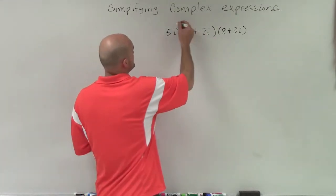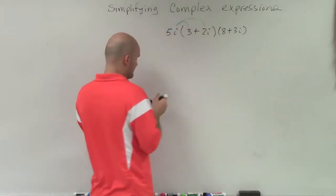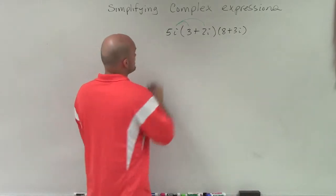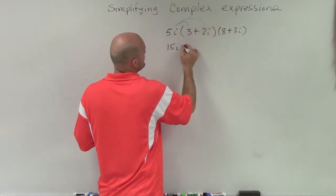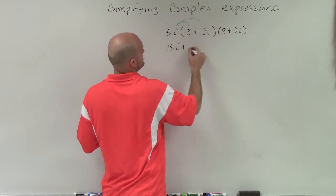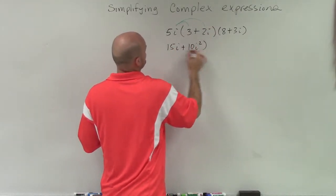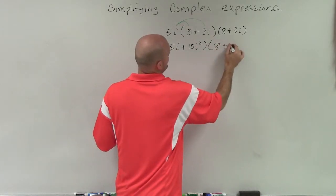To do this, we have to apply the distributive property first, and then we'll multiply the two binomials. By multiplying using the distributive property, I now have 15i + 10i² times (8 + 3i).